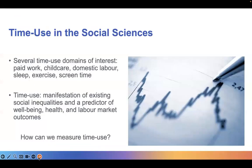Let's first clarify what we mean when we employ the term time use in social sciences. Time use essentially refers to the way people spend their time. There are several time use domains that are of particular interest to social scientists.